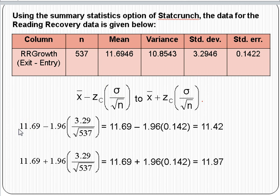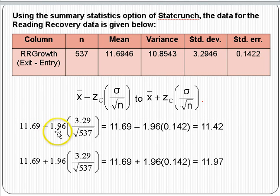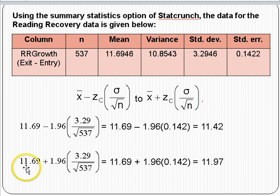Plugging the values into the formula, we want to construct a 95% confidence level, so Z sub C is essentially 1.96. We go up 1.96 standard deviations and down 1.96 standard deviations, and we should have a 95% chance of capturing the true mean growth score for all students in this district. Starting at the sample mean and going down 1.96 standard deviations of the sample mean gives 11.42; going up 1.96 standard deviations gives 11.97.